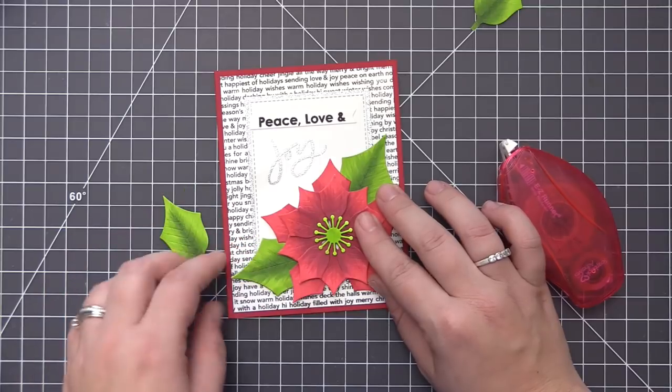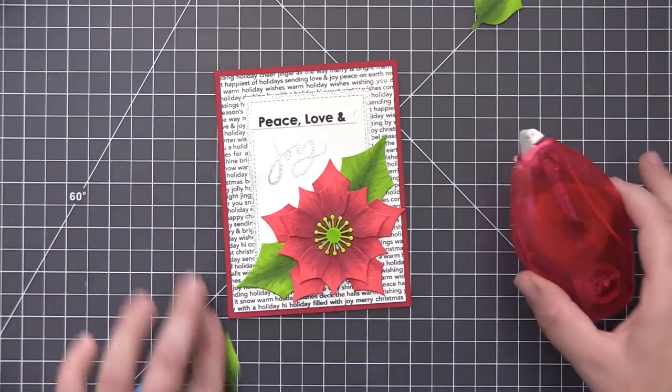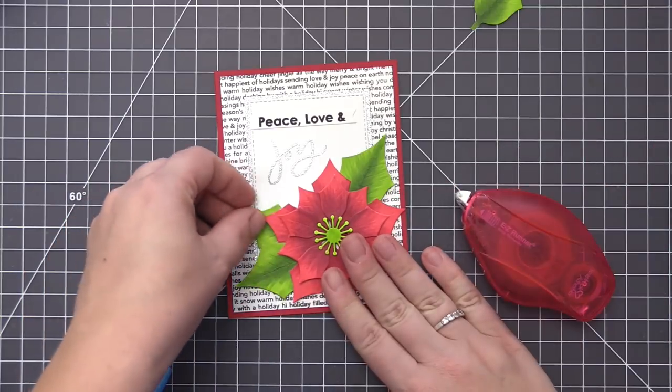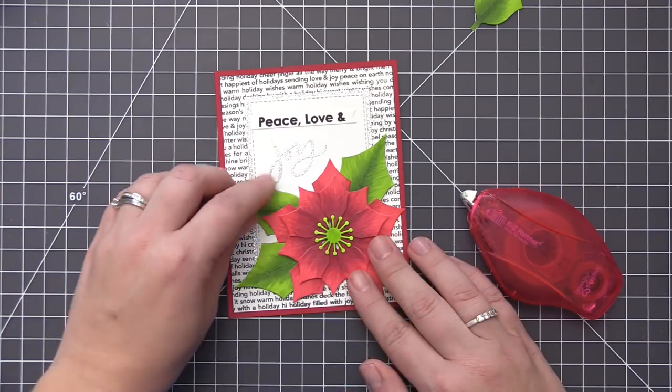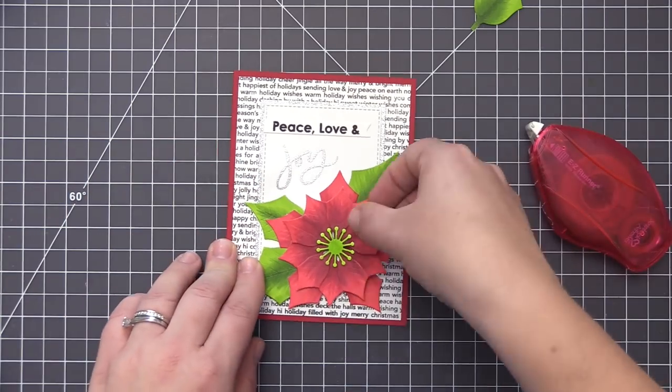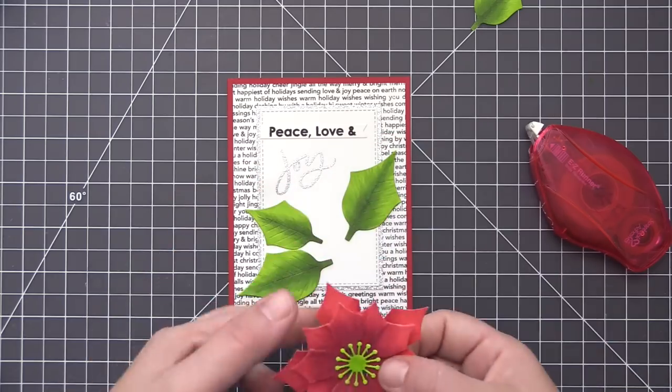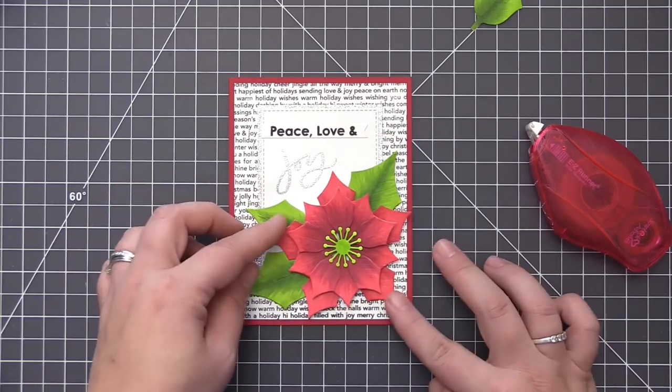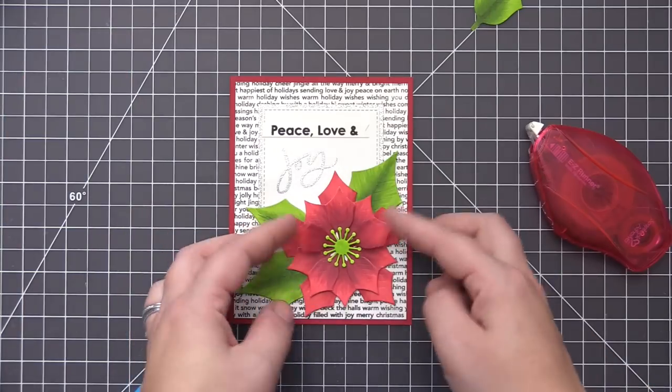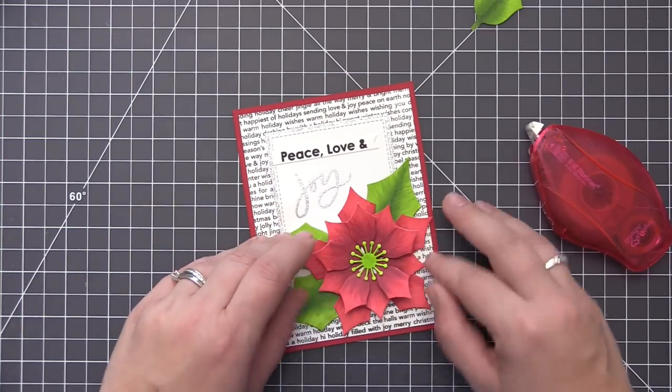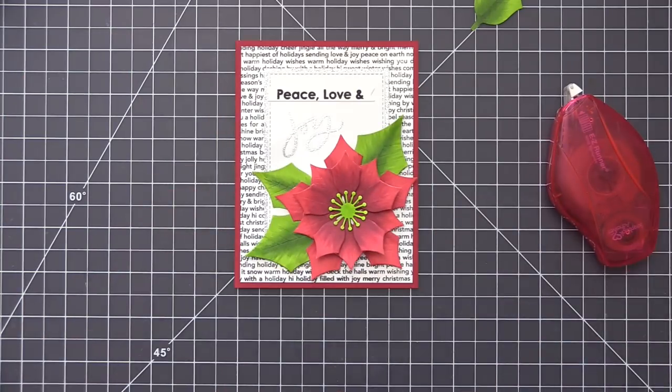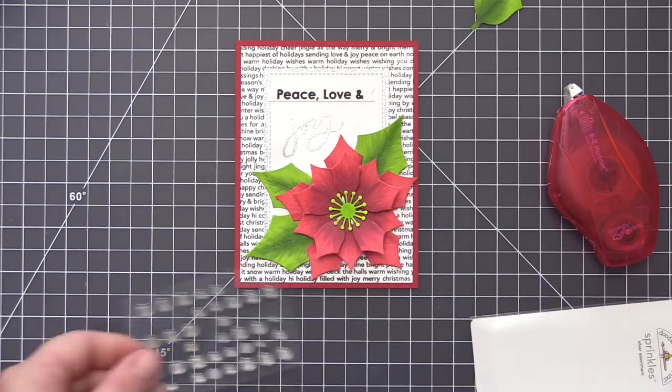So I'm adding adhesive to the back of each of these and getting those where I want them, pressing them down and then I'm just going to kind of very carefully lift up the flower and get that exactly where I want it and then I'll press everything down really firmly. Then I'm going to kind of lift up the petals for that little bit of dimension. I also folded up the ends of the leaves.